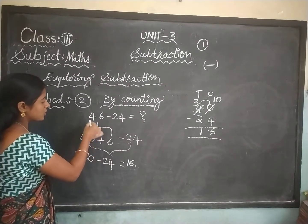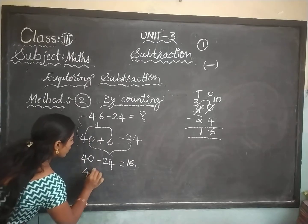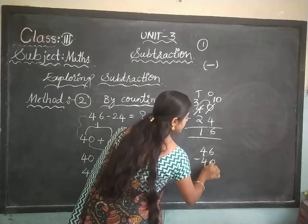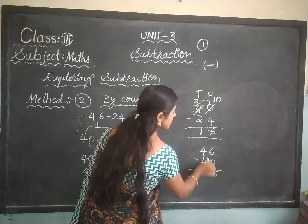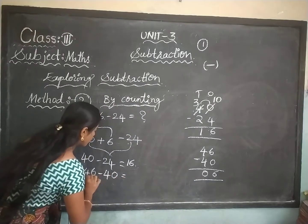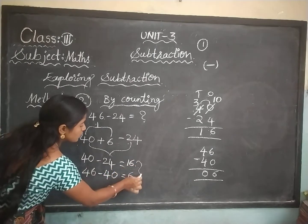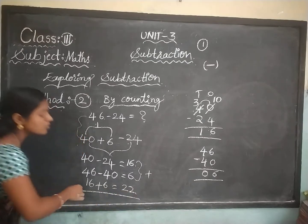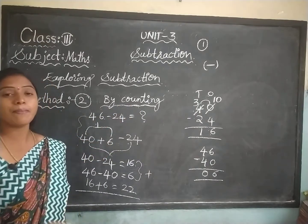Next, subtract 46 minus 40. In the ones column, 6 minus 0 stays as 6. In the tens column, 4 minus 4 equals 0. So 46 minus 40 equals 6. Now you should do addition of these two numbers: 16 plus 6 equals 22. The answer is 22. This is the by-counting method — Method 2.